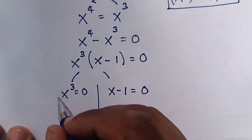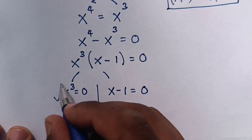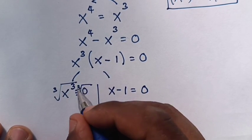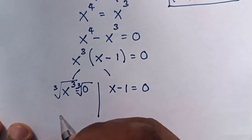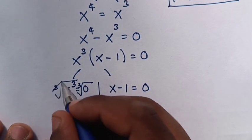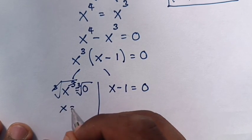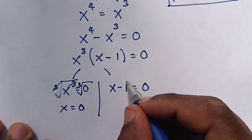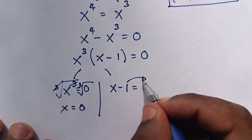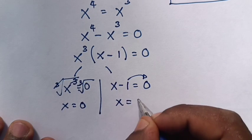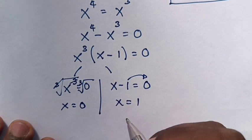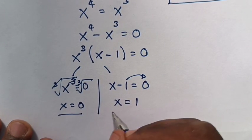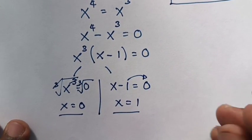When we apply the cube root to x power 3 equals 0, the cube root and the power 3 cancel, so x is equals to 0. And from x minus 1 equals 0, we take 1 to the right side, so x is equals to 1. So we can see x is equals to 0 and x is equals to 1.